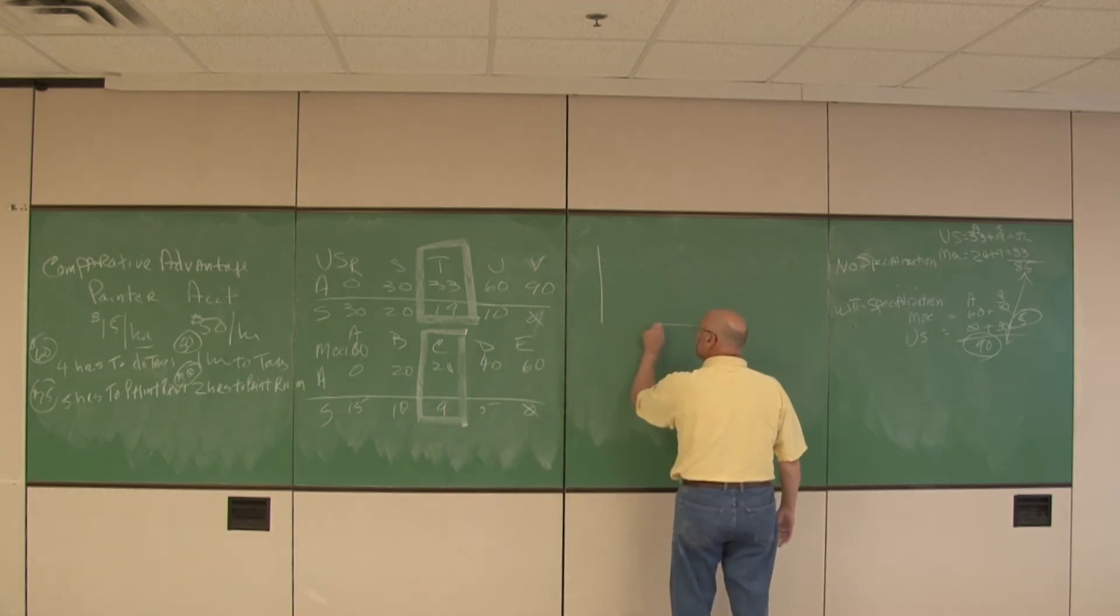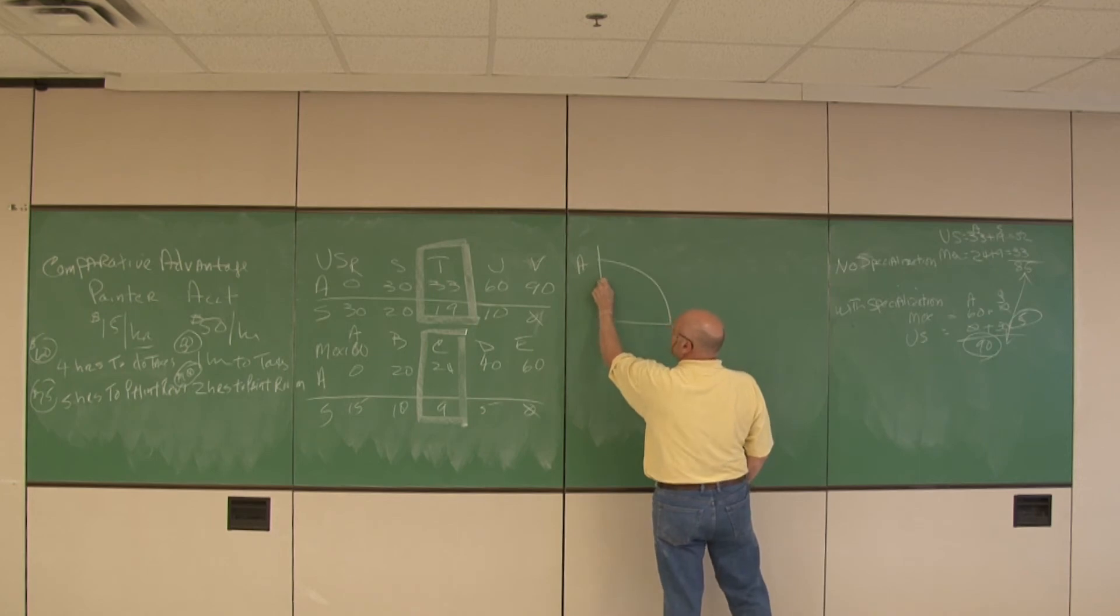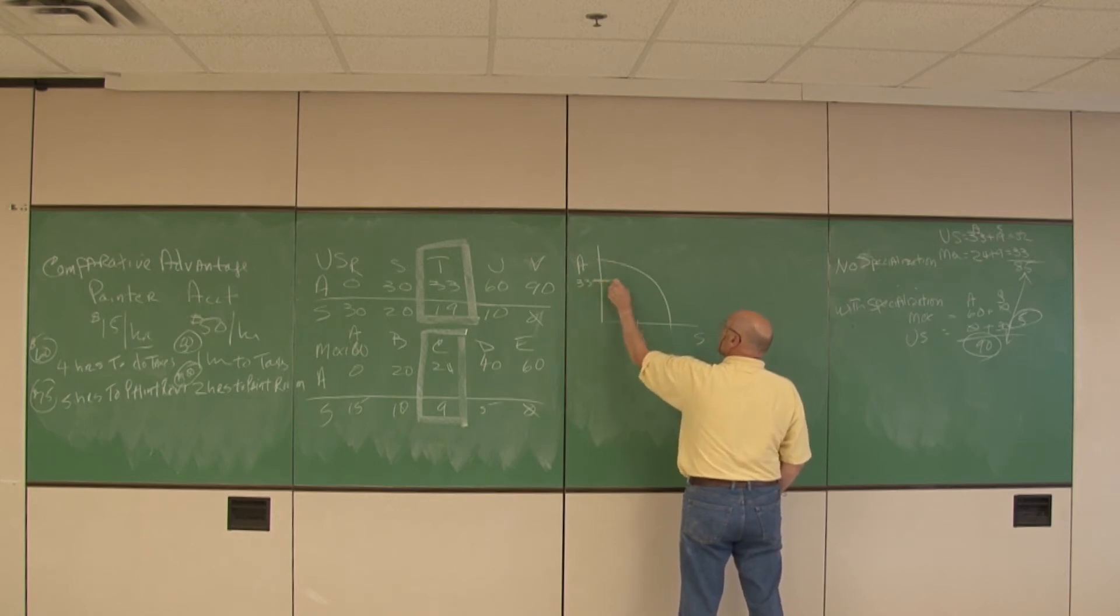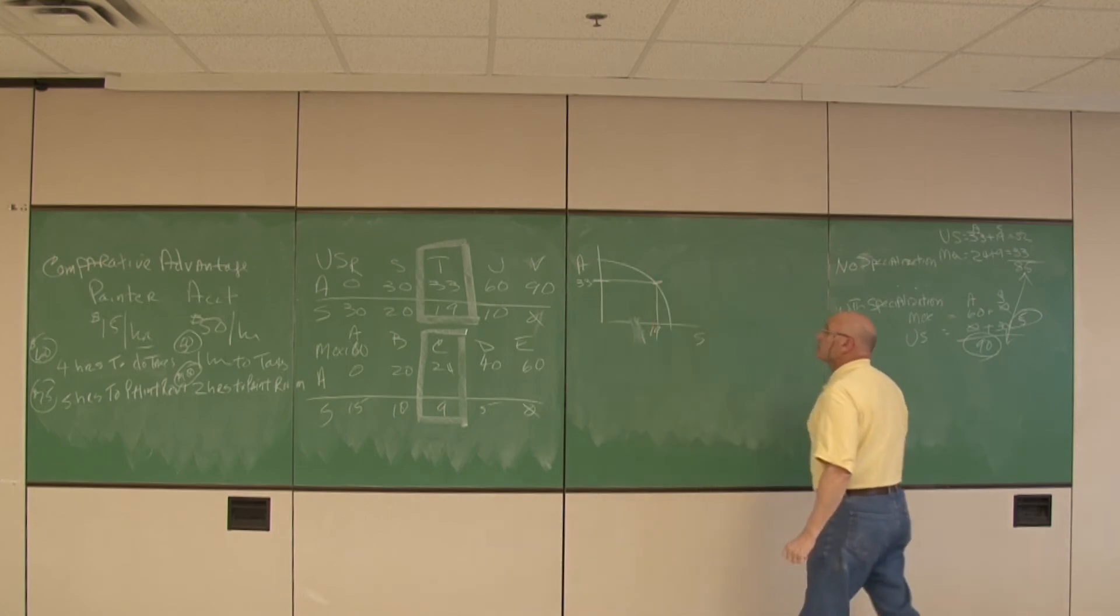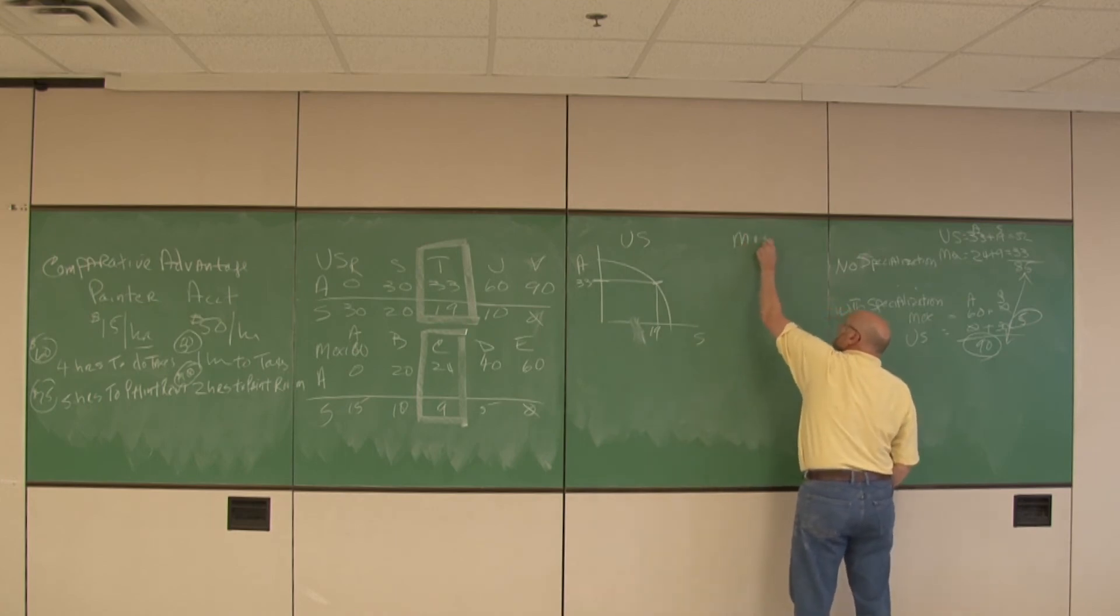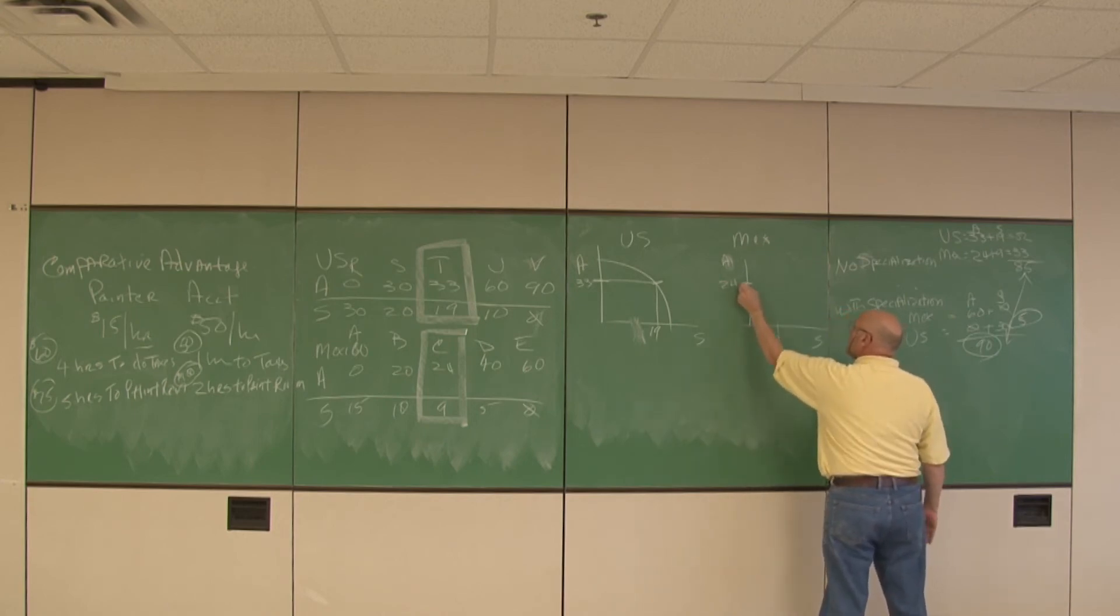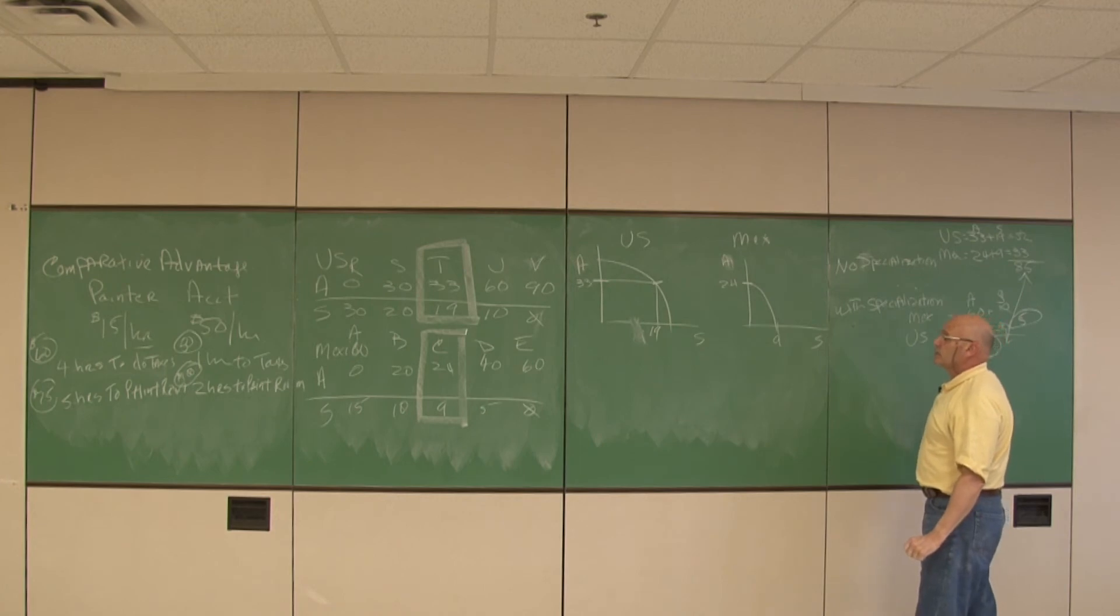If we take the United States, and right now the United States, without specialization, is producing 33 avocados and 19 soybeans. And for Mexico, for soybeans and avocados, they want 24 avocados and 9 soybeans. And that would be their productions possibilities curve.